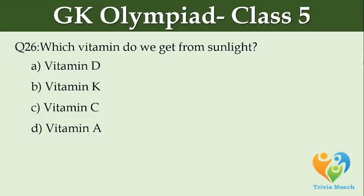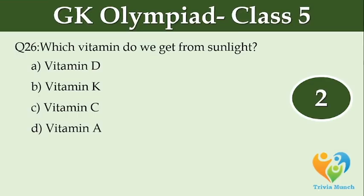Which vitamin do we get from sunlight? Option A: Vitamin D. Option B: Vitamin K. Option C: Vitamin C. Option D: Vitamin A.